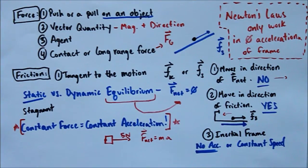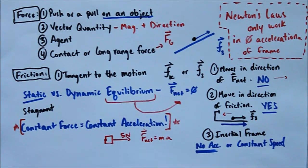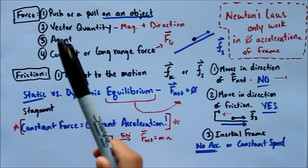What I mean by an agent is that there must be something which is exerting this force. So whether that be, in the case of gravity, it's the Earth itself. It's this massive object, its mass is attracting other objects. Therefore, we feel this pull towards the surface of the Earth, or technically it would be towards the center of the Earth, but we get stopped by the crust. So we've got an agent.